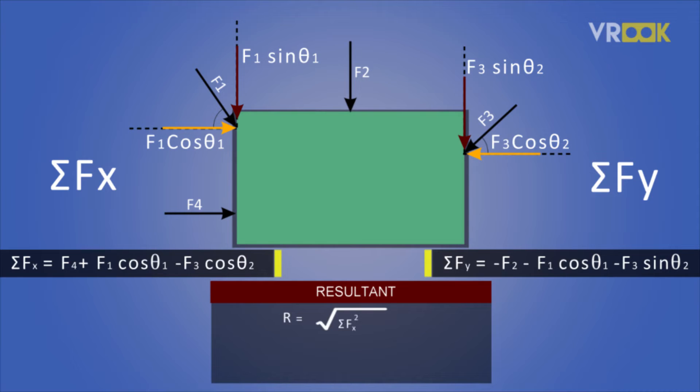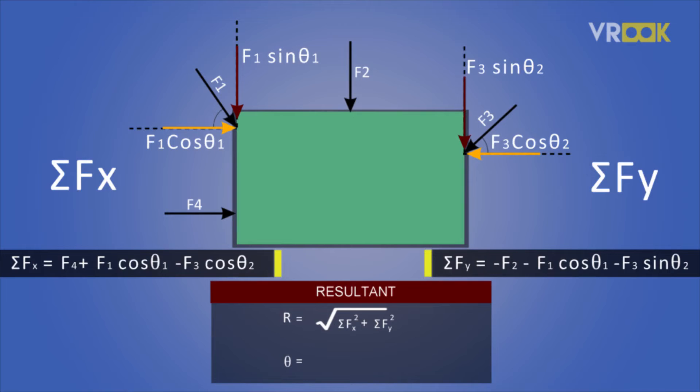Now that we have the summation of horizontal and vertical forces, the resultant is given by the square root of Fx² plus Fy². This is the magnitude of the resultant and it can replace all the forces acting on the body. Along with the magnitude, we should also know the direction of this resultant, which we calculate using a formula to find the angle theta.